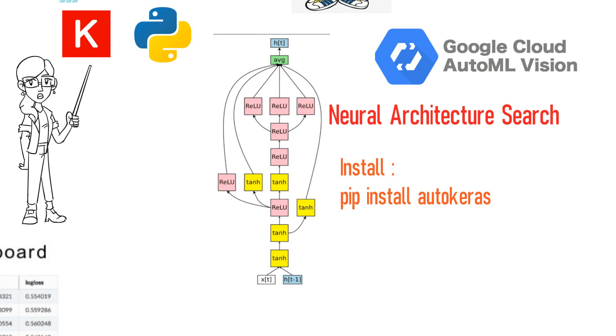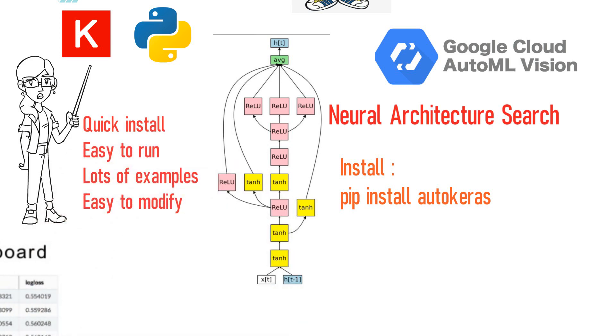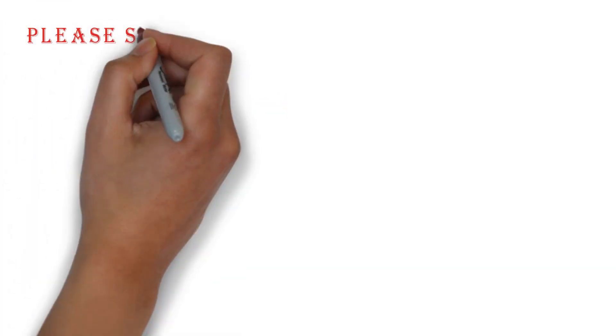AutoKeras has everything a great open source project should have: quick install, easy to run, lots of examples, easy to modify. And you even get to see the network model that NAS found out at the end.